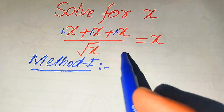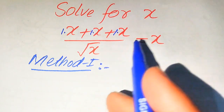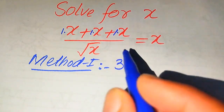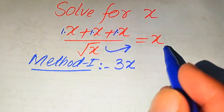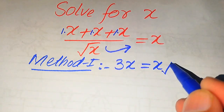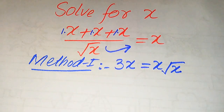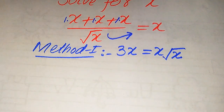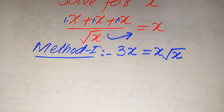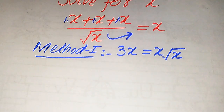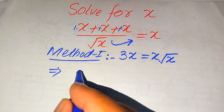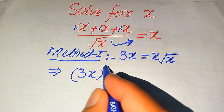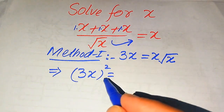The coefficients of these three terms is one, so when we add one three times it becomes three times of x. Further we move the square root of x to the right hand side, and when we move it to the right hand side it is multiplied by x and it will be written as x times of square root of x. In the next step we need to remove the square root sign from the right hand side, so in order to remove the square root of x we need to take squaring on both of the sides.